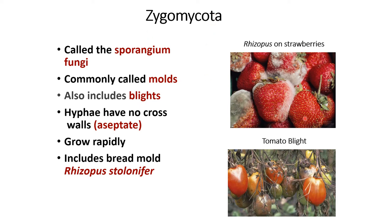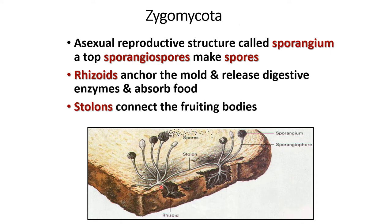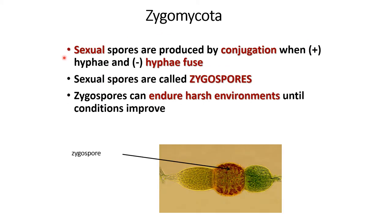Zygomycota, also called sporangium fungi, are commonly called molds and include blights. Their hyphae have no cross walls — they are aseptate — and grow rapidly. Examples include bread mold and Rhizopus stolonifer. In asexual reproduction, the sporangium atop the sporangiophore makes spores; rhizoids anchor the mold, release digestive enzymes, and absorb food; stolons connect the fruiting bodies. In sexual reproduction, positive and negative hyphae fuse to produce zygospores, which can endure harsh environments.